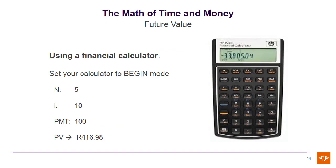However, you could instead use your financial calculator, but you must remember to set it to begin mode. Looking at the second row from the top, the first button set as MAR — below that you will see Begin/End. If you click on the orange arrow and select Begin, your calculator is now set to go. So if you are in begin mode, input N equals 5, I/Y equals 10, payment equals 100, and your present value comes out at R416.98.